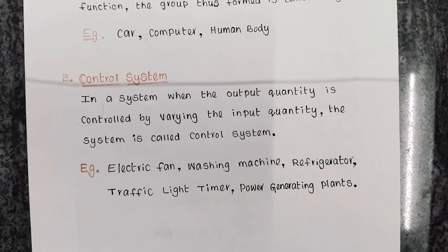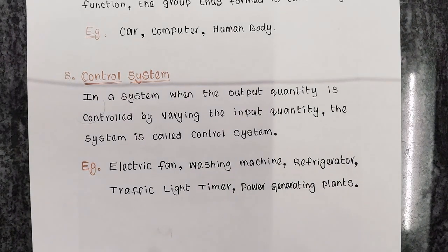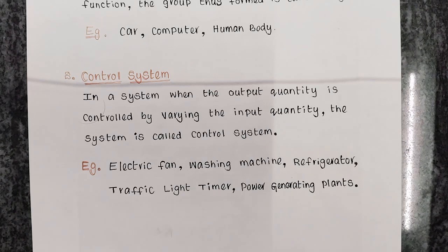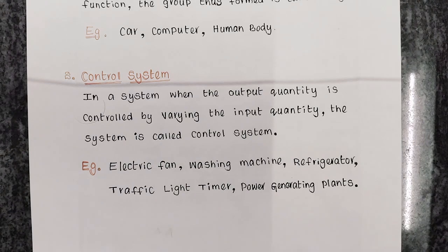A power generating plant — a hydro plant, a thermal plant, a nuclear plant — power demand is the output quantity and the input quantity is the steam or water. By changing the quantity of steam or water which is falling on the turbines, we can change the output quantity, that is the power generation.